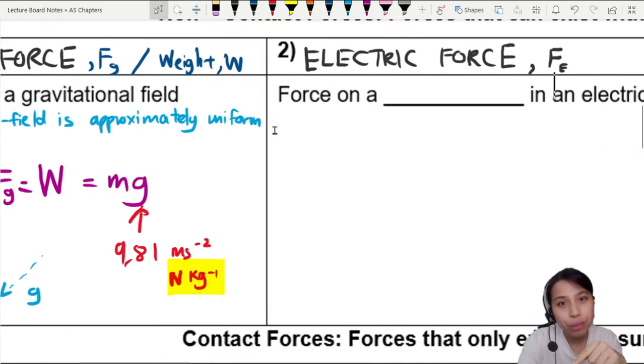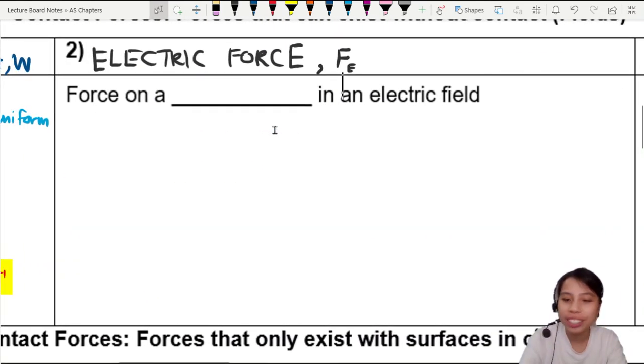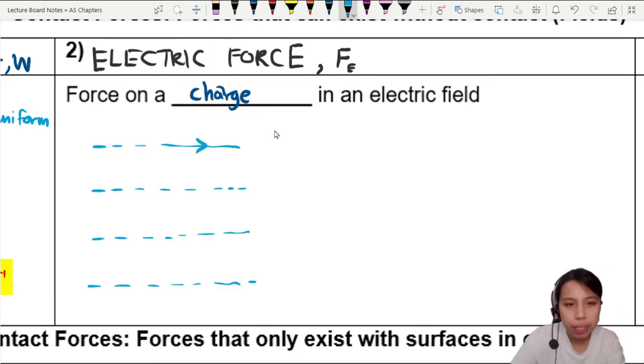Sometimes we put a big E, sometimes a small E, but E for electricity. Now while the gravitational force acts on a mass, electric force acts on the charge. So let's say I set up an electric field that looks like this and the field is pointing in this direction.